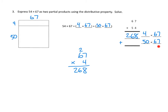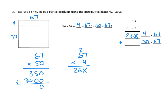Now let's do our other partial product, which is 50 times 67. For 50 times 7: that's 5 tens times 7 ones, which is 35 tens, or 350. Then 5 tens times 6 tens — 5 times 6 is 30, and 10 times 10 is 100, so that's 30 hundreds. Adding 350 and 3,000 together gives us 3,350 for our other partial product.